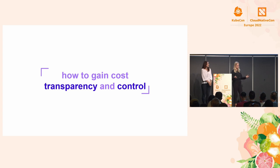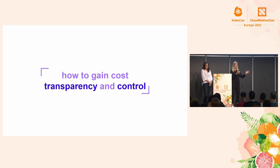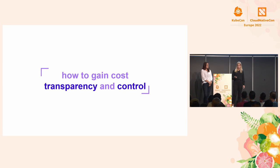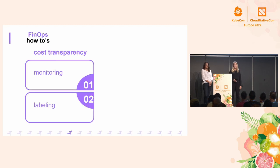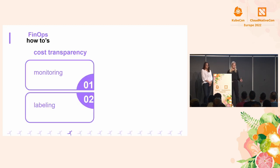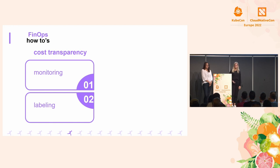It's all about how to gain transparency when it comes to Kubernetes and cloud cost management — and to then have control about these costs. There are many different ways to get there, but the main strategies to gain cost transparency are monitoring and labeling. On the other side, to gain cost control: right-sizing and waste management. Let's dive a little bit deeper into that.